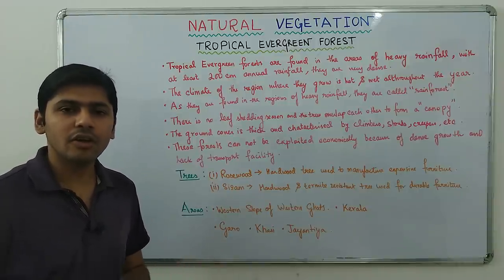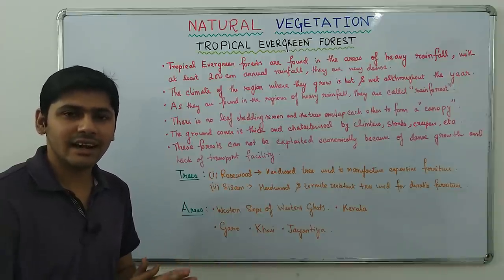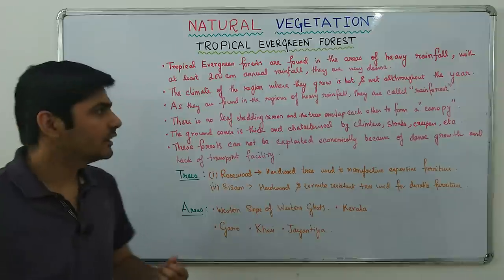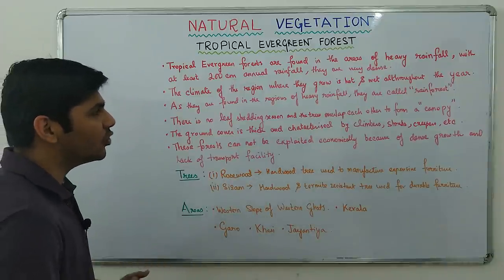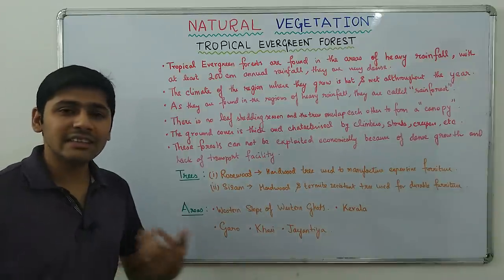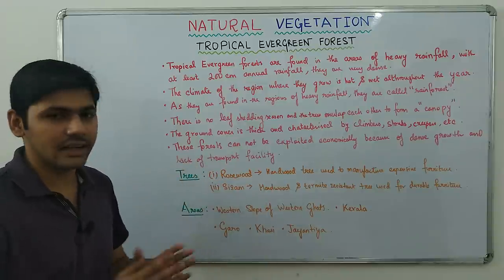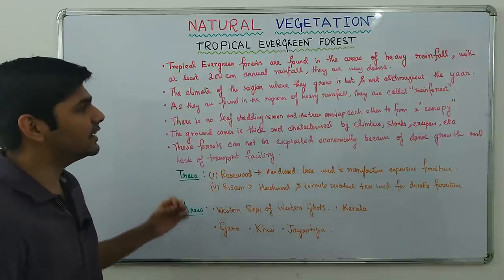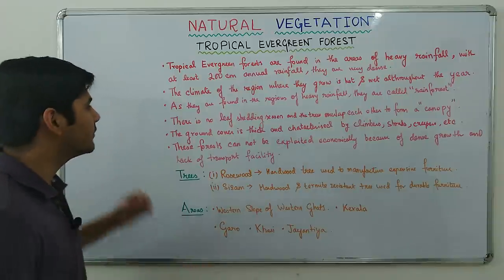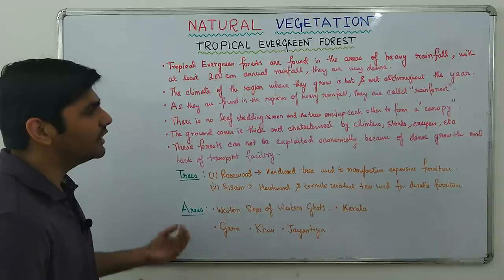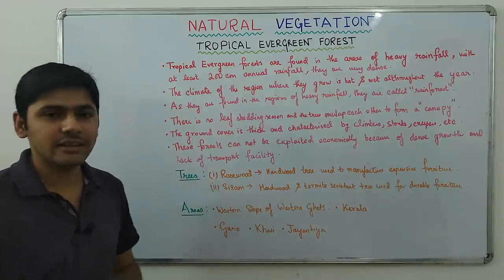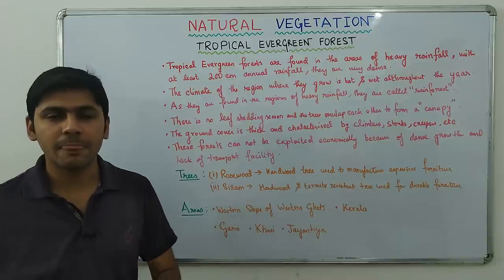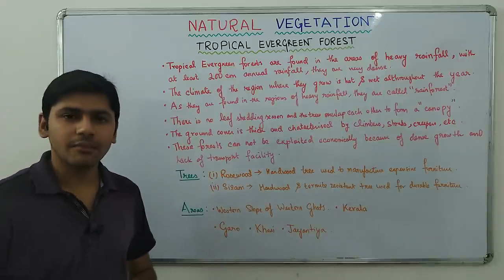The climate where Tropical Evergreen Forests grow is hot and wet all throughout the year, which is required for their dense growth. That is why these forests are also called rainforests. There is no leaf shedding season — each tree sheds leaves at different times — and the trees overlap each other to form a canopy. At some places the canopy is so thick that sunlight cannot penetrate and reach the ground.